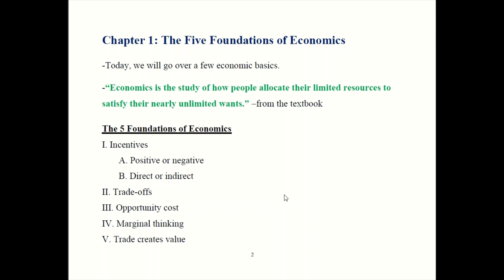Those first two concepts — incentives and trade-offs — might be familiar to you already, at least vaguely. But the third one, opportunity cost, might be novel. We'll spend some more time on that when we get to that section of the chapter. Number four is marginal thinking — looking at the costs and benefits of adding one additional unit above what you already have.